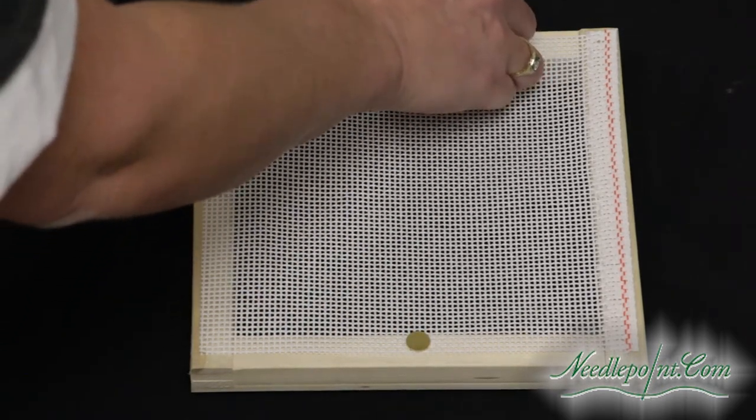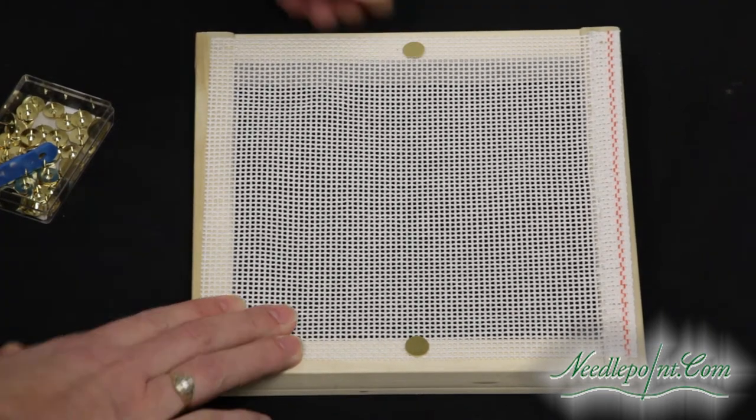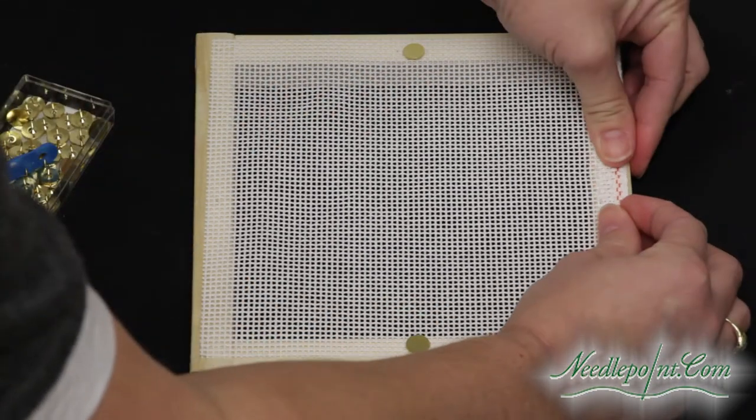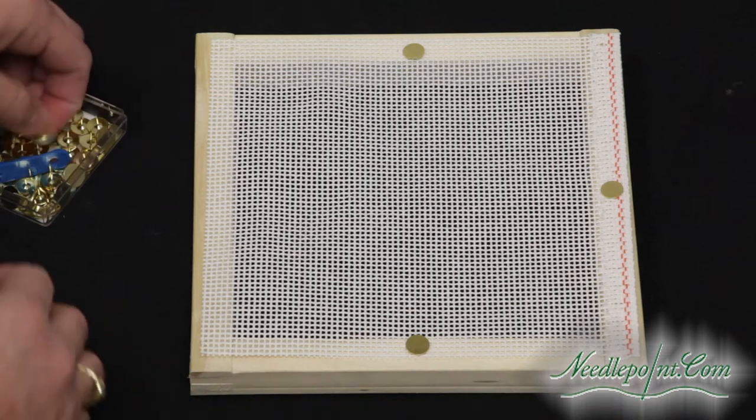Place your next tack directly opposite of the first tack on the upper portion of the wood. Pull your canvas tightly and place your next tack on the side of the frame. Your next tack will go directly opposite this tack.